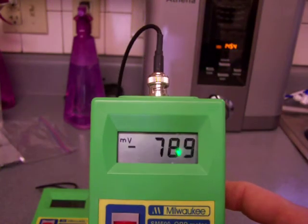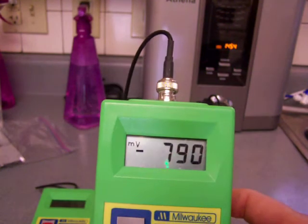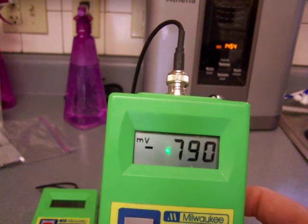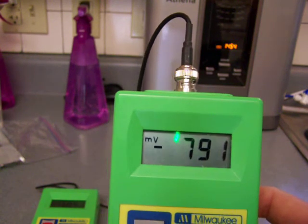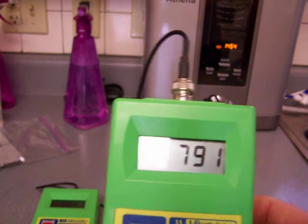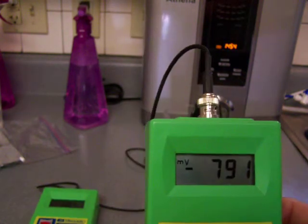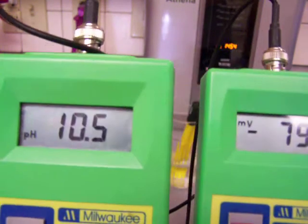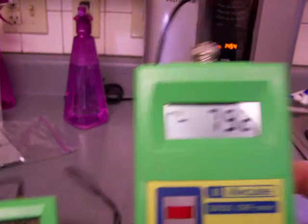Alright, right now my Athena water ionizer is producing at level 3 a negative 791 ORP, which is really awesome. Now, by the way, that is at a 10.5 pH.